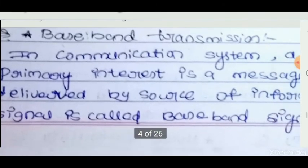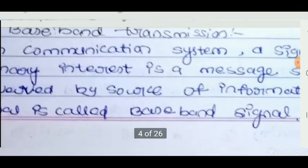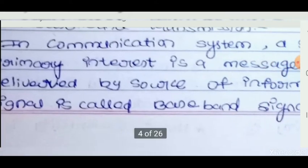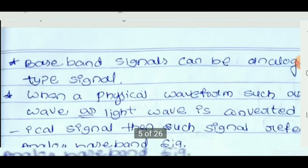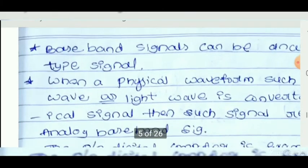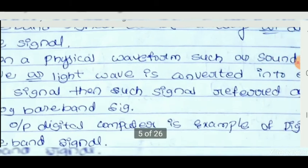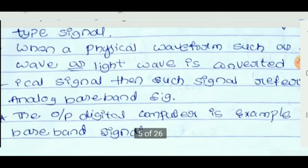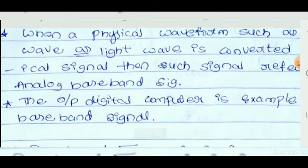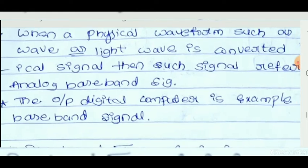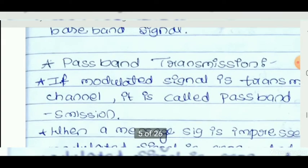A signal of primary interest in a communication system is a message signal delivered by a source of information; such a signal is called a baseband signal. Baseband signals can be analog or digital. When a physical waveform such as a sound wave or light wave is converted into an electrical signal, it is referred to as an analog baseband signal. The output of a digital computer is an example of a baseband digital signal.